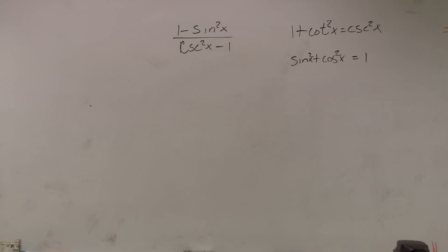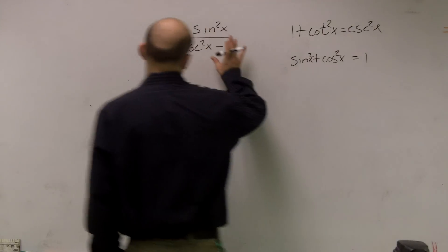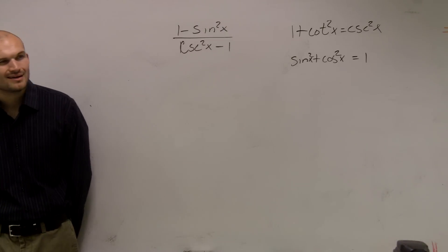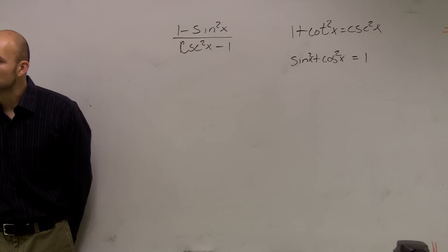Okay. So if we have 1 minus sine squared of x divided by cosecant squared of x minus 1, there's really not too much I can do with this.